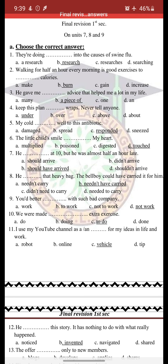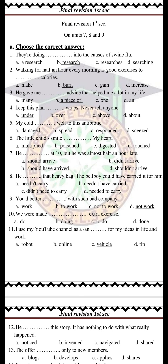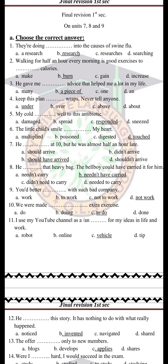Number 10: 'We were made — space — extra exercise.' Look at 'make.' We all know that 'make' is followed by bare infinitives. But you have to decide if the sentence is in active or passive form. Here 'make' is in the passive form, so we have to follow it by 'to + infinitive.' So the right answer is 'to do,' not 'do.' Take care of that.